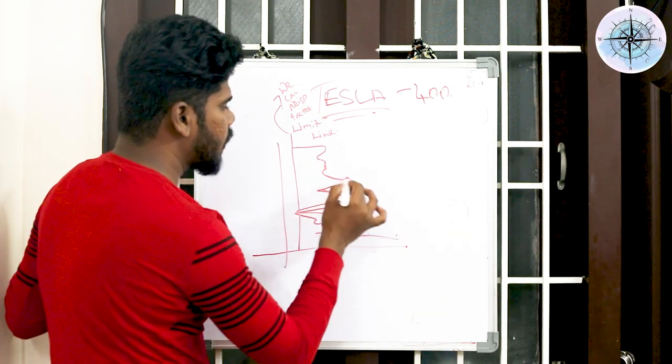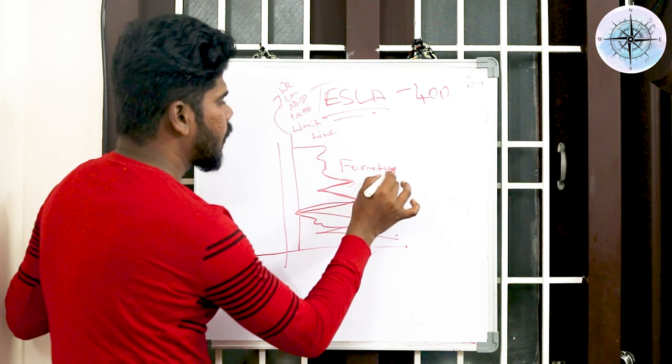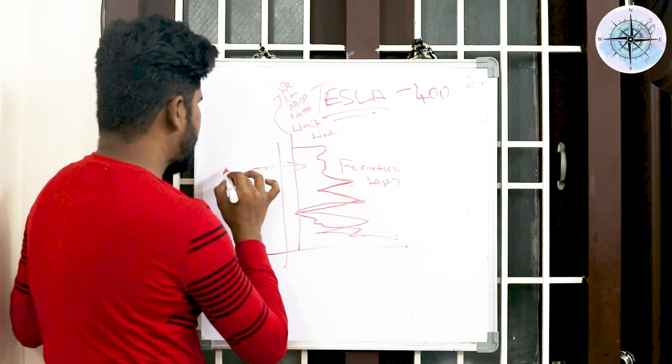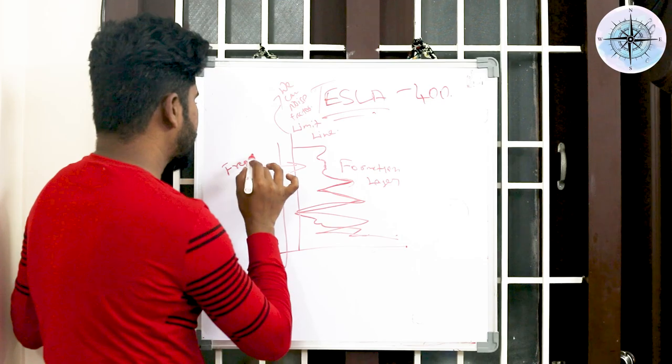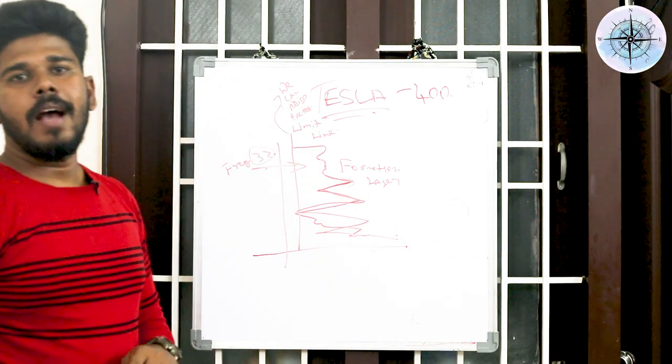This indistinct change you shouldn't be considering. The changes which are gradually increasing you can consider as the formation change layer. So you can consider this particular frequency, for example frequency number 33.